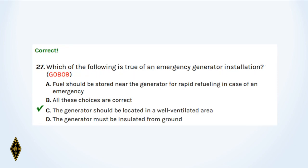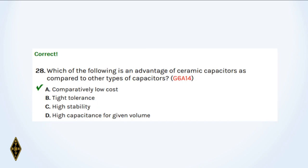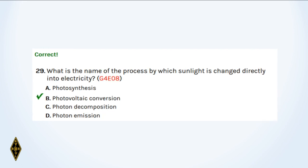And 27: Which of the following is true of an emergency generator installation? It must be located in a well-ventilated area. And 28: Which of the following is an advantage of ceramic capacitors? Cheap. And 29: What is the name of the process by which sunlight is changed directly into electricity? That's photovoltaic conversion — think about 'volt,' photovoltaic.